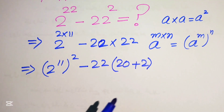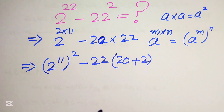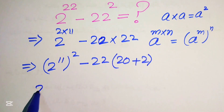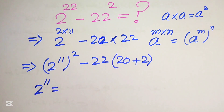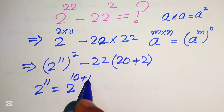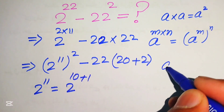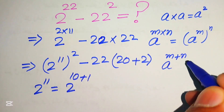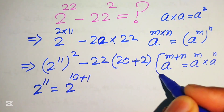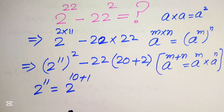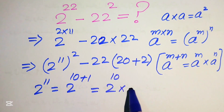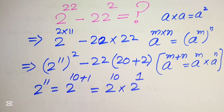Now in the next step we need to find the value of 2 to the power of 11. We write 2 to the power of 11 as 2 to the power of 10 plus 1. Using the exponent law — a to the power of m plus n equals a to the power of m multiplied by a to the power of n — we break the exponent and write it as 2 to the power of 10 multiplied by 2 to the power of 1.